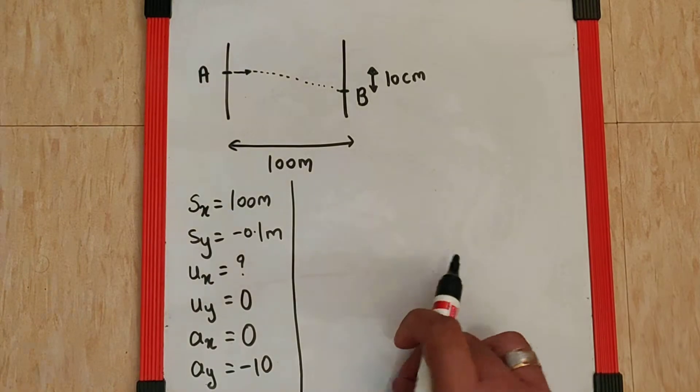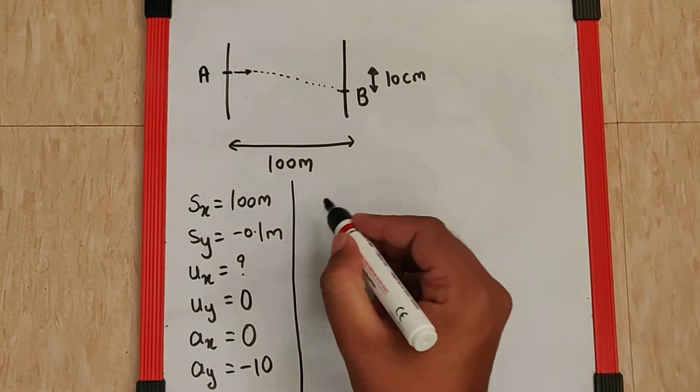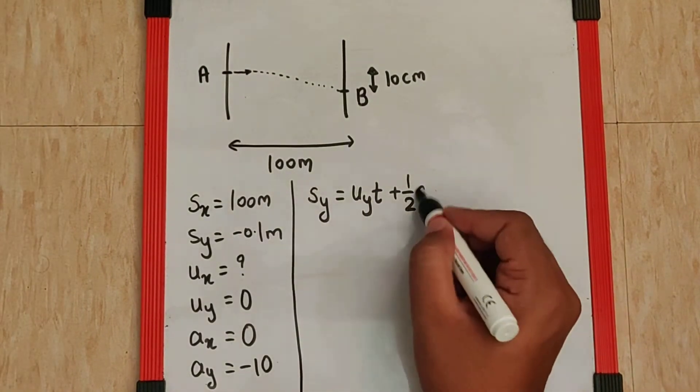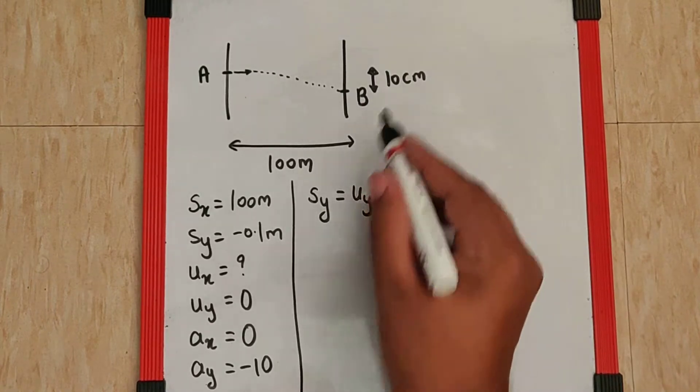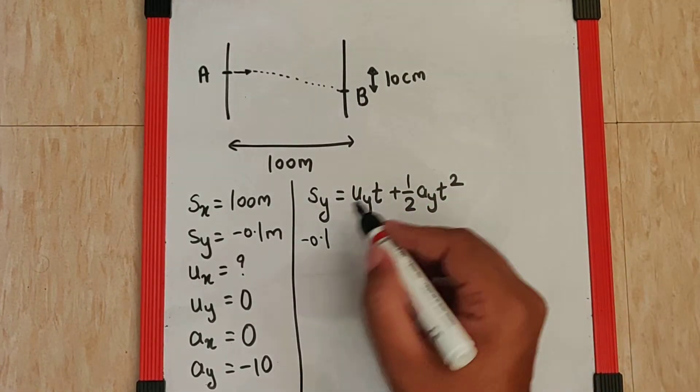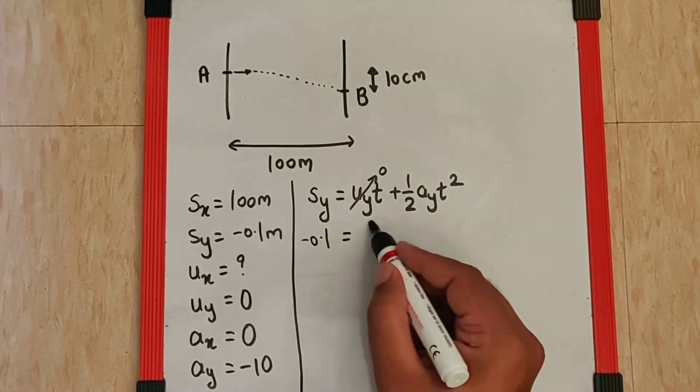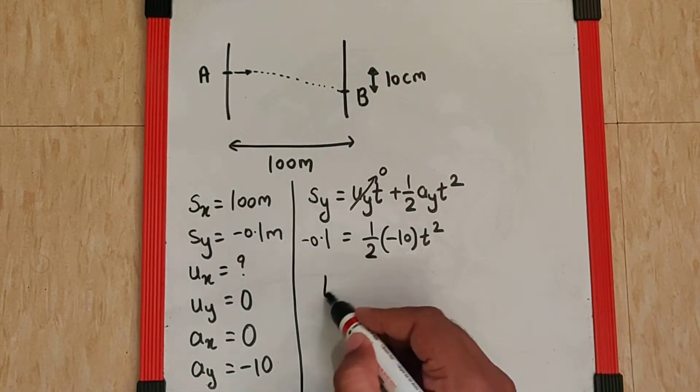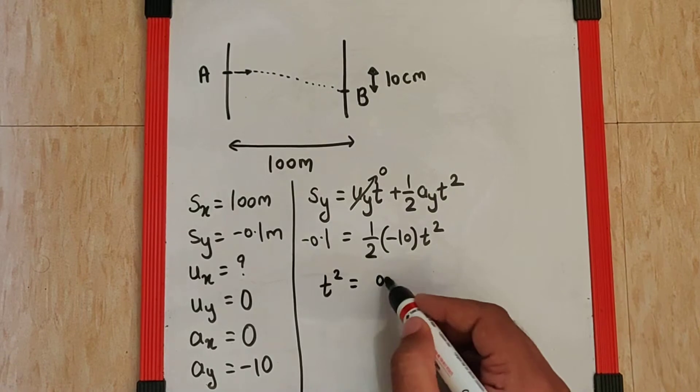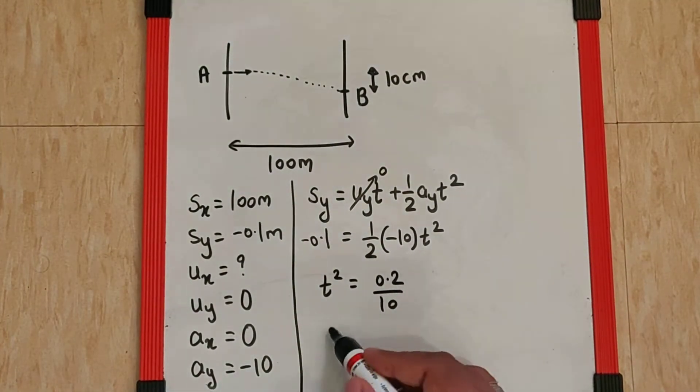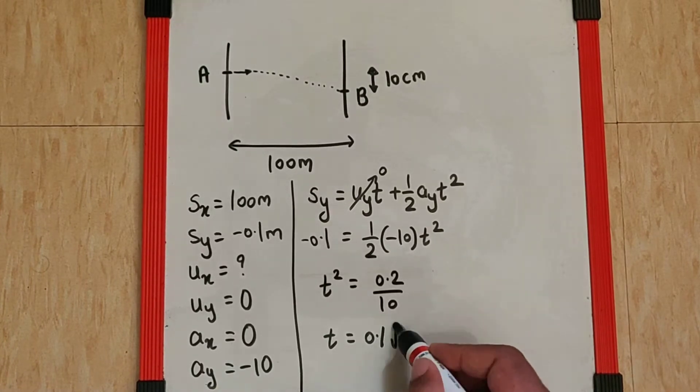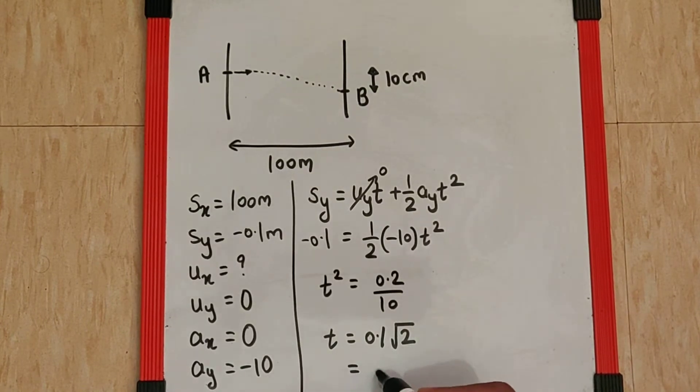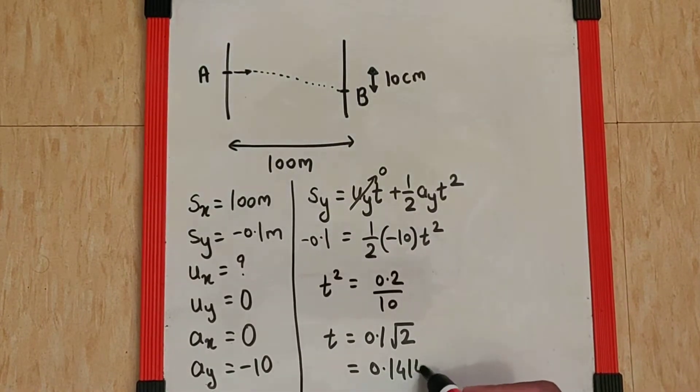If we use this data to find the value of Ux, we can go like this. Sy is equal to UyT plus half AyT square. Sy is minus 0.1. Uy is 0, so entire part is 0. Half Ay is minus 10 T square. That makes T square as 0.2 by 10 which is 0.02. That makes it 0.1 root 2 which is 1.414 into 0.1. That is nothing but 0.1414 second. That is the time we have found out.